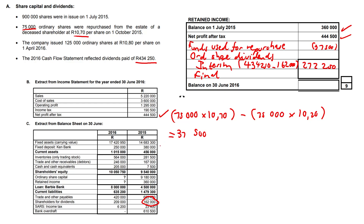The final dividend amount — this is promised to shareholders for the next financial year — is going to be $209,000. We can plug it in as is. Add the $272,250 and the $209,000, and we get $481,250.